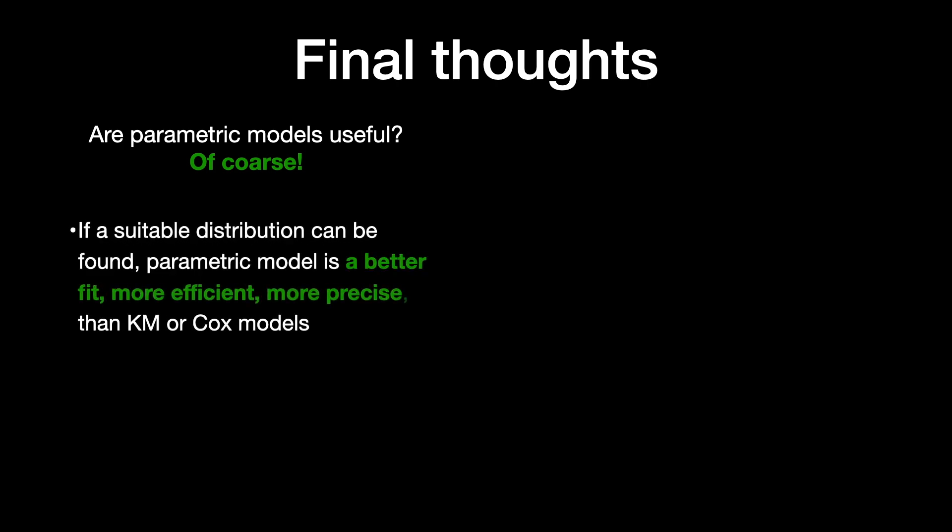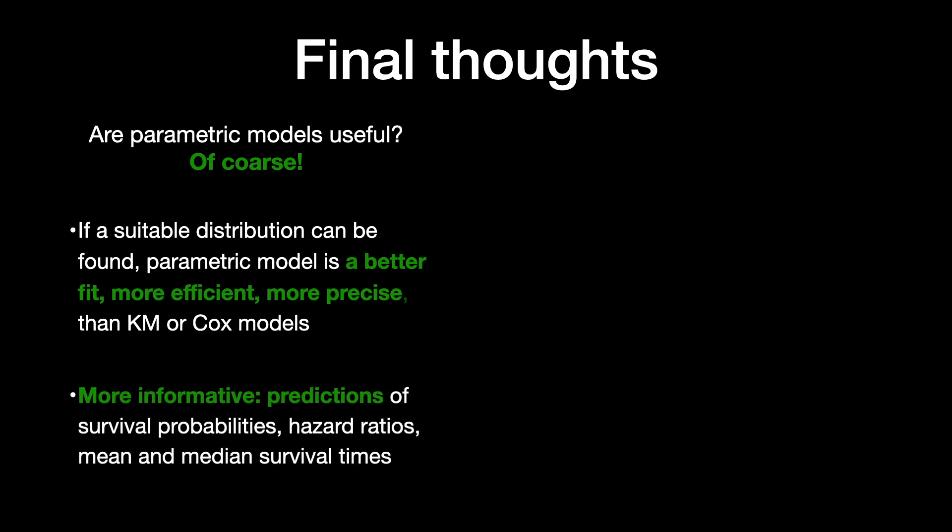So, in the end, are parametric models useful at all? And the answer is of course. If a suitable distribution can be found, a parametric model is a better fit, more efficient and more precise than Kaplan-Meier or Cox models. Parametric models are also more informative, which means they can predict survival probabilities, hazard ratios, mean or median survival times.